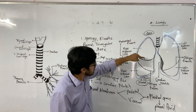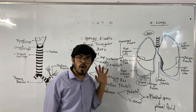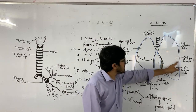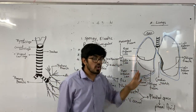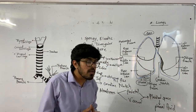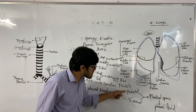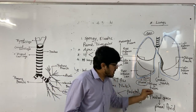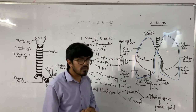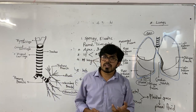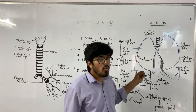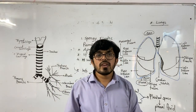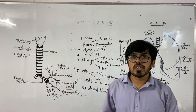The right lung has three lobes — superior, middle, inferior — divided by horizontal and oblique fissures. The left lung has two lobes — superior and inferior — divided by an oblique fissure, and also shows a cardiac notch. Both lungs are protected by the pleural membrane, which has parietal and visceral layers with pleural fluid in between that helps in protection, shock absorption, and reducing friction during breathing. In the next lecture we will discuss the structure of alveoli and the mechanism of breathing.